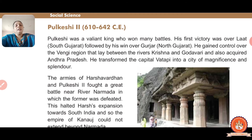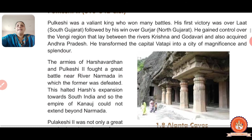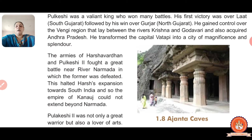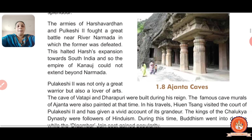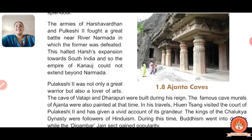The armies of Harshvardhana and Pulakesi II fought a great battle near the Narmada, which is situated in the middle part of India. Harshvardhana was defeated by Pulakesi II. Harsha's expedition towards South India was halted, so the empire of Kanauj could not extend beyond the Narmada. Pulakesi II was not only a great warrior but also loved the arts, which is why he built many buildings.